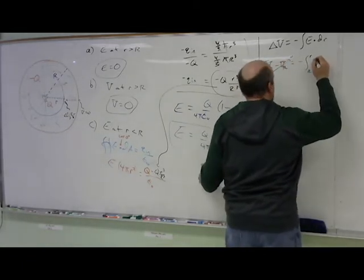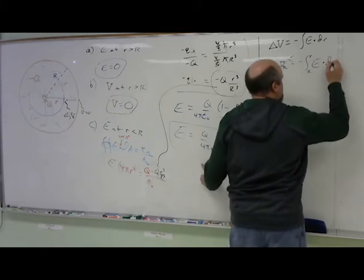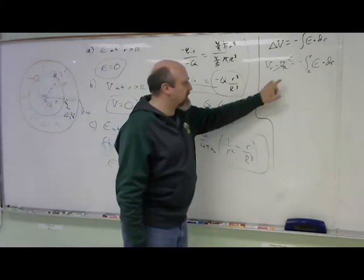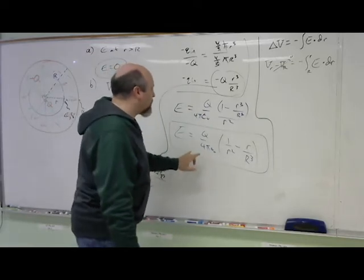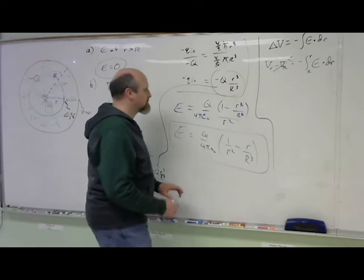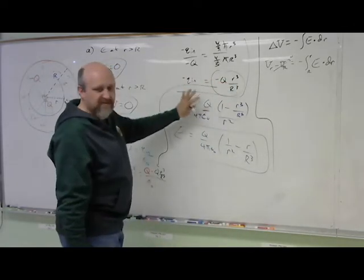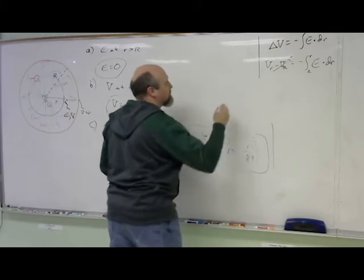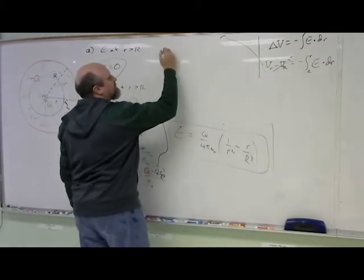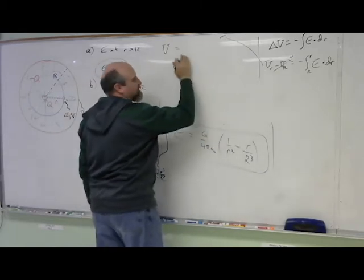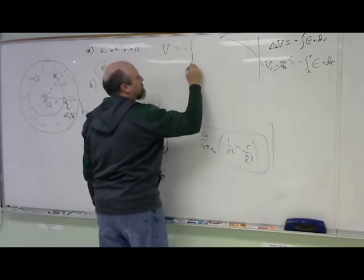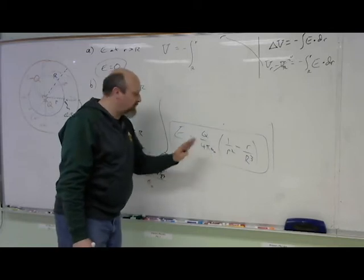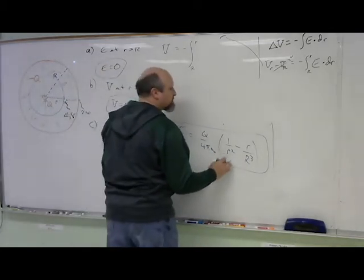The E field is going outward while our path is going inward, so the angle between them is 180 degrees. That means this integral will come out negative, and the negative sign in the formula will make the final answer positive — which makes sense, because as we move closer to the positive charge at the center, the potential should rise above zero. The E field expression is a nice function only in r, so I can integrate it directly.